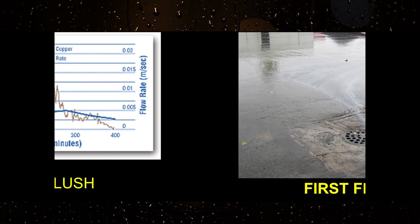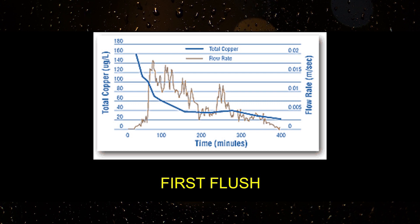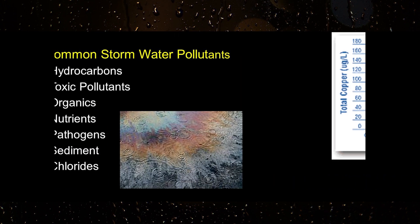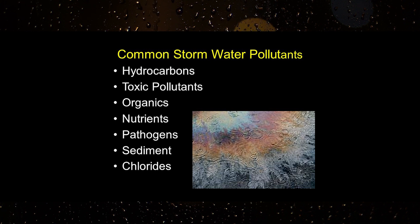It has been determined that this first flush of stormwater runoff contains the highest percentage of pollutants, which in general include hydrocarbons, toxic pollutants, organics, nutrients, pathogens, and sediment.